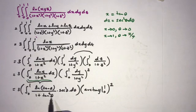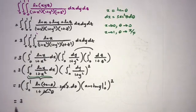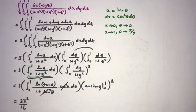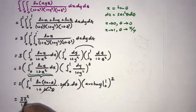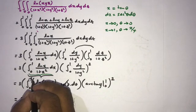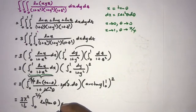Since 1 + tan²(θ) = sec²(θ), the sec²(θ) terms cancel. We note that arctan(1) = π/4 and arctan(0) = 0, so the squared integral gives (π/4)². We can now write 3 times (π²/16) times the integral from 0 to π/4 of ln(tan(θ)) dθ.